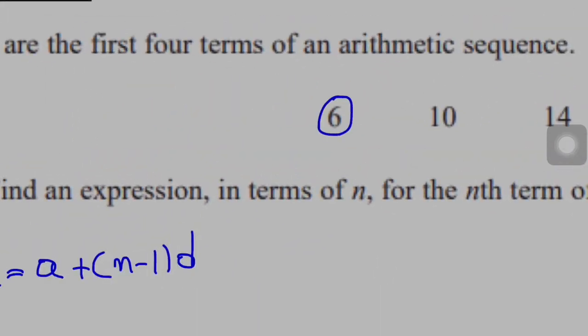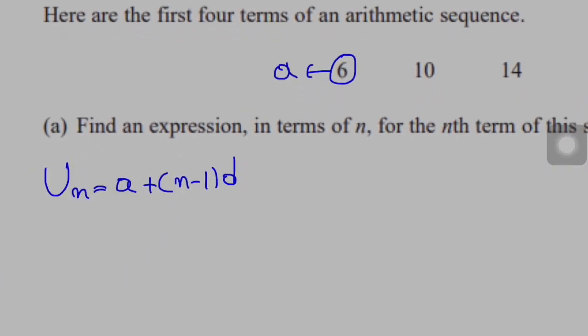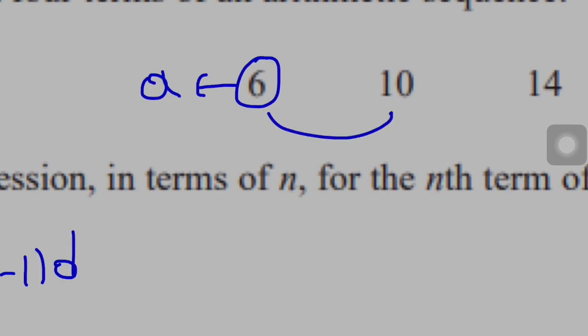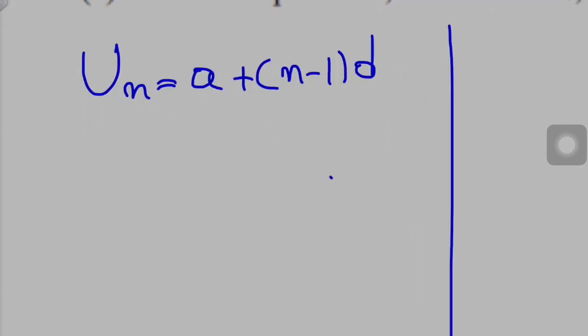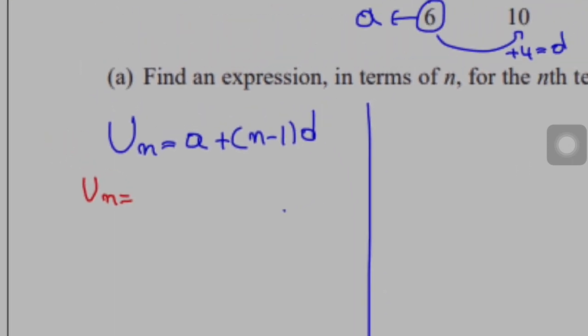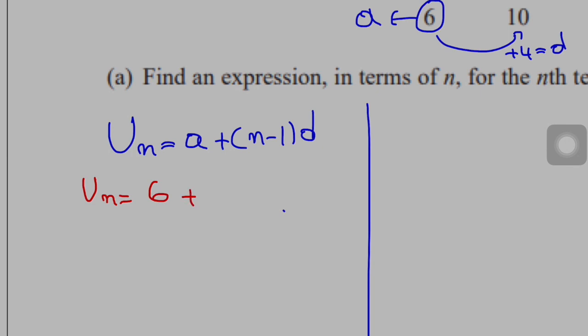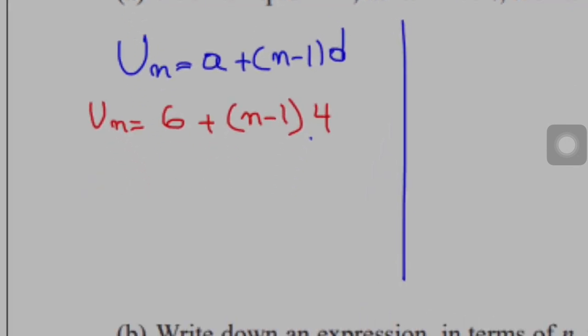I can easily see that the first term is 6, so a is 6, and I can see that the difference between these two is 4, so d is positive 4. So all I will do is substitute in the equation. It's Un equals, instead of a, I'll write 6 plus n minus 1, and instead of d, I'll write 4.